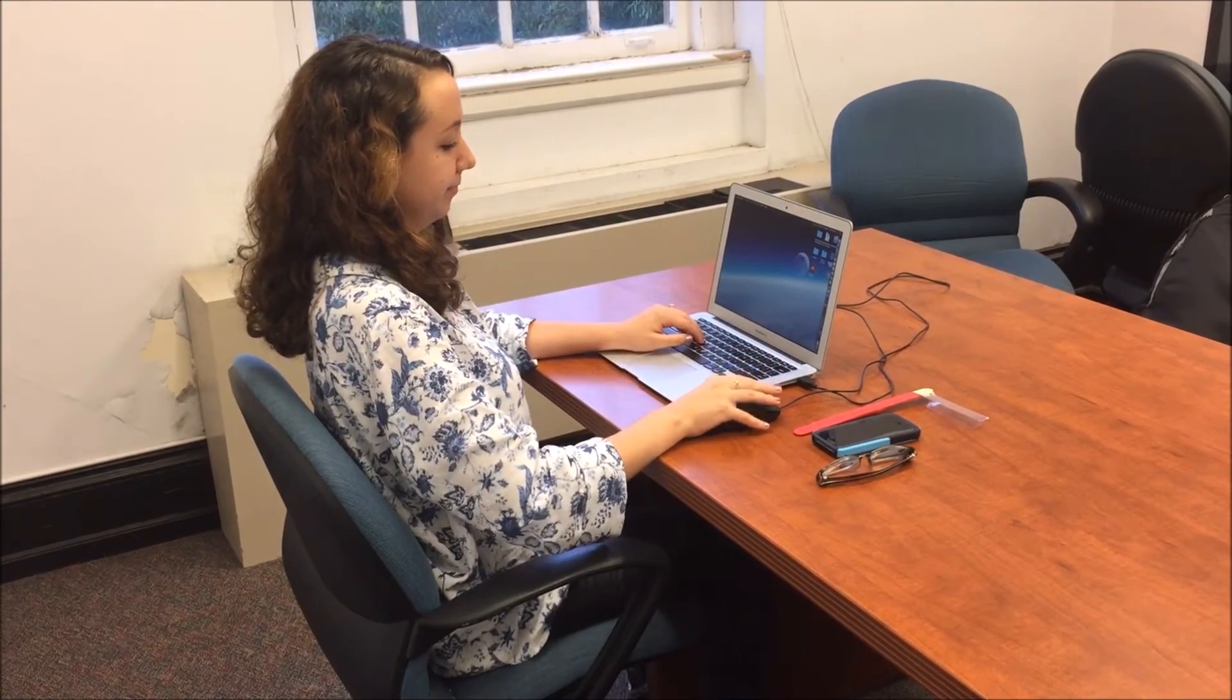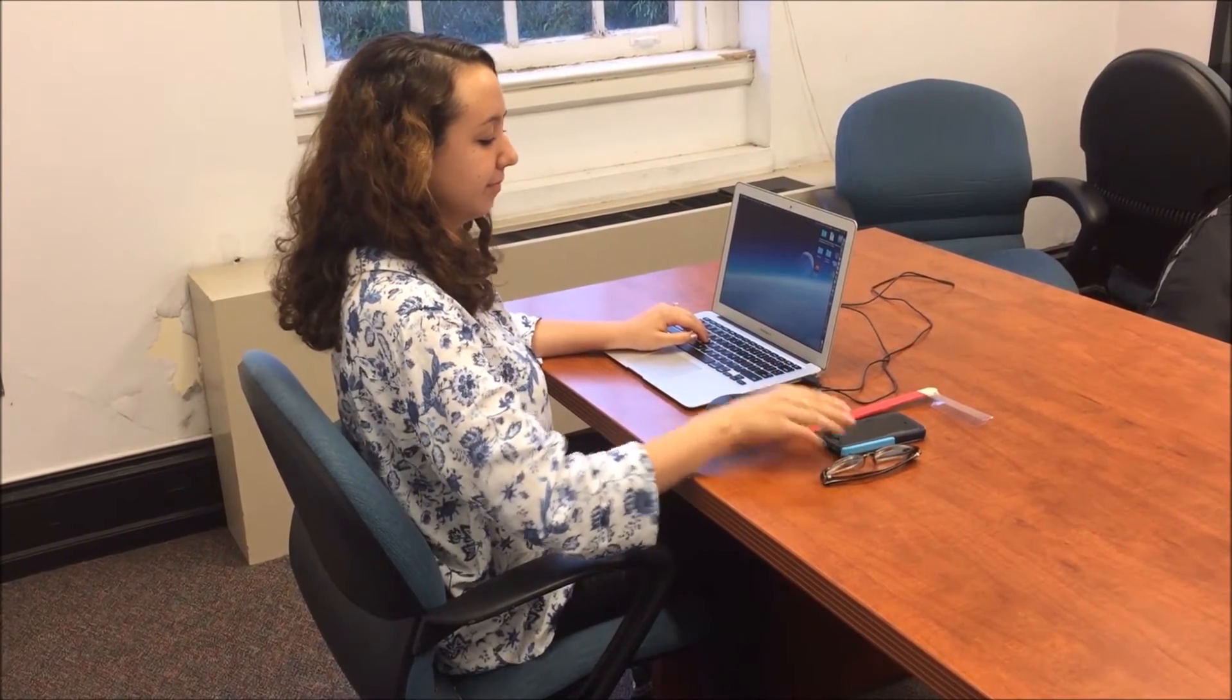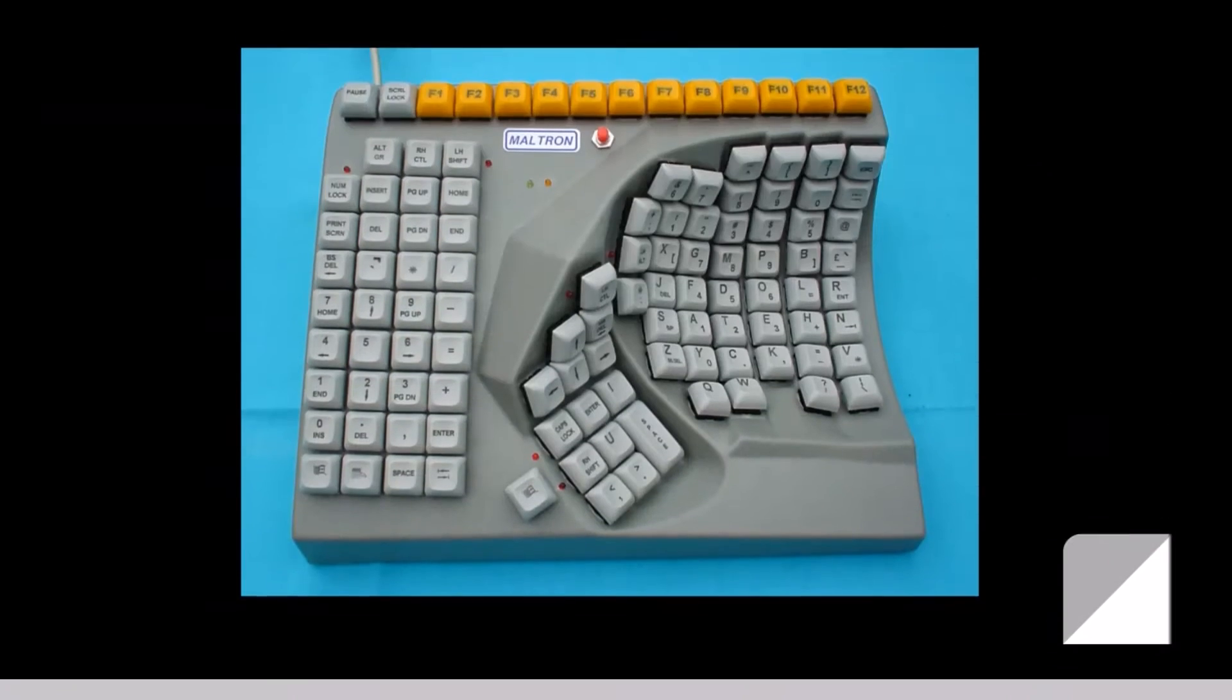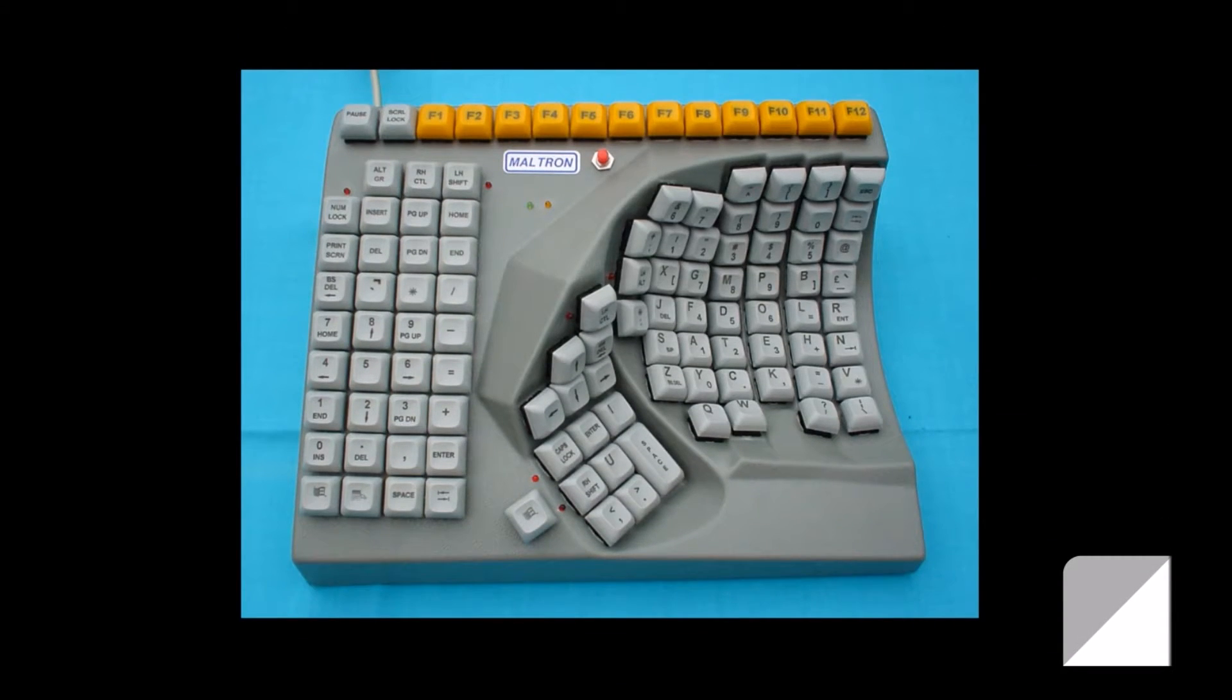Placing these items on the right side along with using a right-handed mouse may be helpful for this client. If a client relies on vision to type accurately, a one-handed keyboard may be helpful as people with homonymous hemianopia may have difficulty seeing the keys on the left side of a traditional keyboard without turning their head.